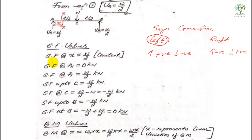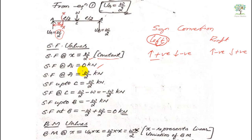Shear force at section XX: on the left side of the section only one force is acting, VA, which is pushing upward. Since we measure from the left side, upward is positive, so the shear force at X equals plus W/2. Shear force at A starts at zero, then jumps to plus W/2 due to VA. Between A and C there are no loads, so the shear force remains constant at W/2.